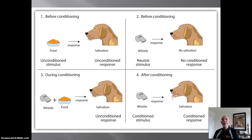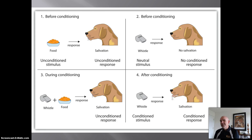This diagram represents Pavlov's famous procedure. Before conditioning, he would present food, which causes the unconditioned response of salivation — no big surprise there. Then he would present a neutral stimulus, in this diagram blowing a whistle, and this would not cause salivation. There's no reason to expect it would, because at this point it's simply a neutral stimulus.